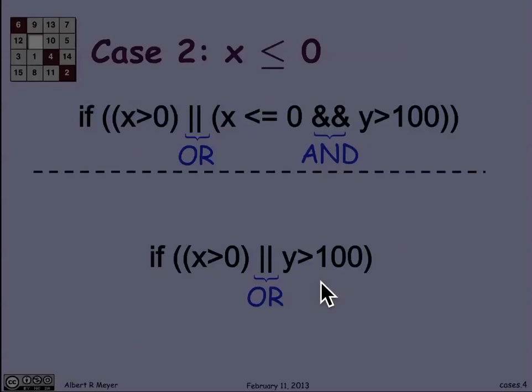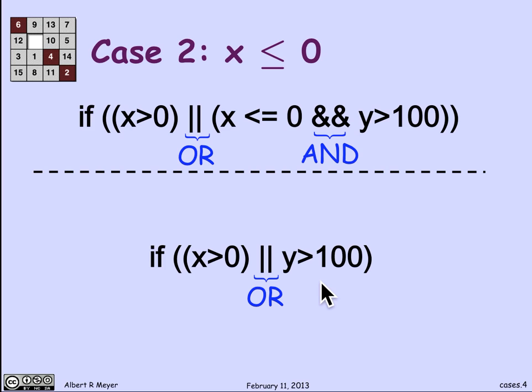The next case is that x is less than or equal to 0. Let's see what happens then. Well, in the top expression, since x is less than or equal to 0, that first expression, x greater than 0, when it's evaluated, returns false. And same thing in the second expression. The initial test x greater than 0 returns false.